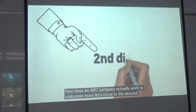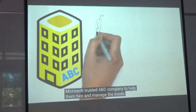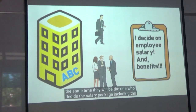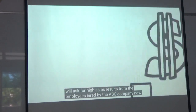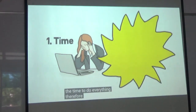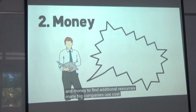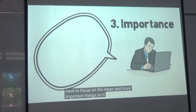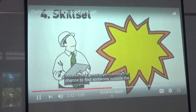Let's take Microsoft as an example. Microsoft trusted the outsourcing company to help them hire and manage inside sales representatives — the company finds human capital and decides the salary package including employee benefits, while Microsoft asks for high sales results from those employees. Before Microsoft decides to outsource, there are a few reasons why: first is time — nobody has the time to do everything; second is money — it takes a lot of time and money to find additional resources, and many big companies use cost efficiency as a reason to outsource; third is importance — sometimes we just have to focus on the main and more important things; and the final factor is skills — outsourcing gives organizations the chance to find someone outside to bring in the skills required.